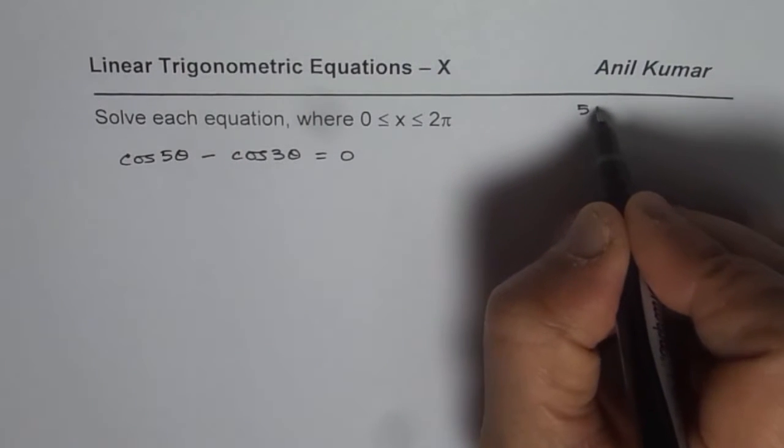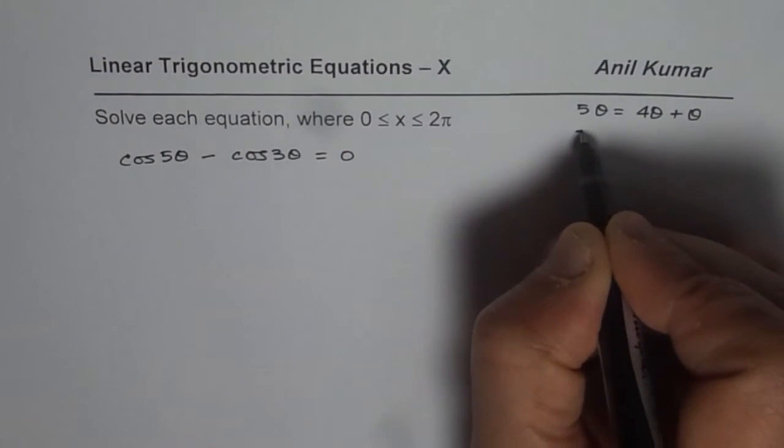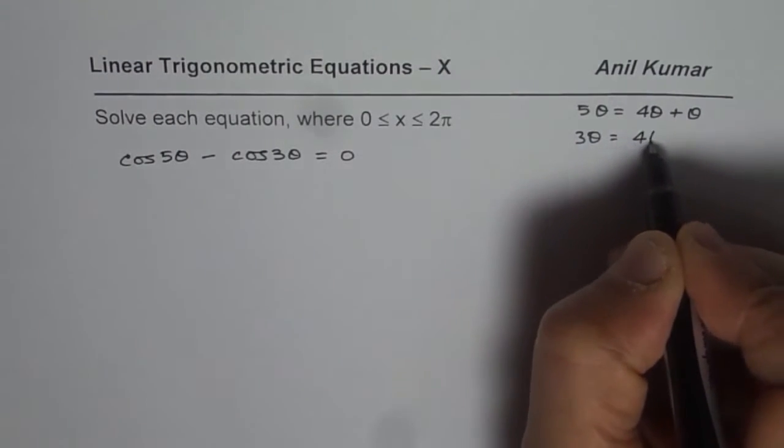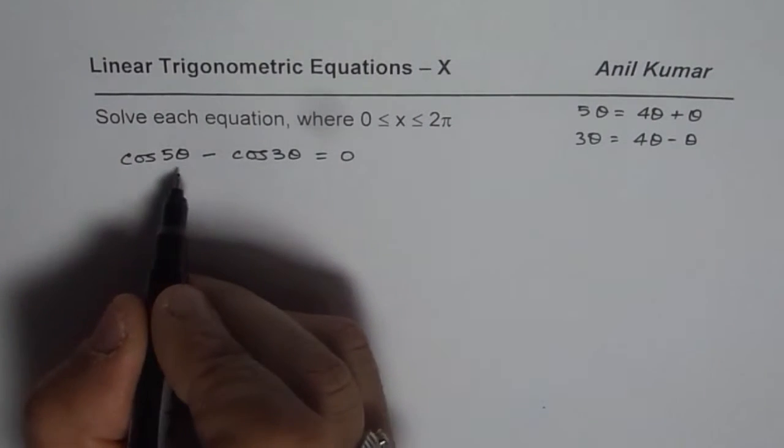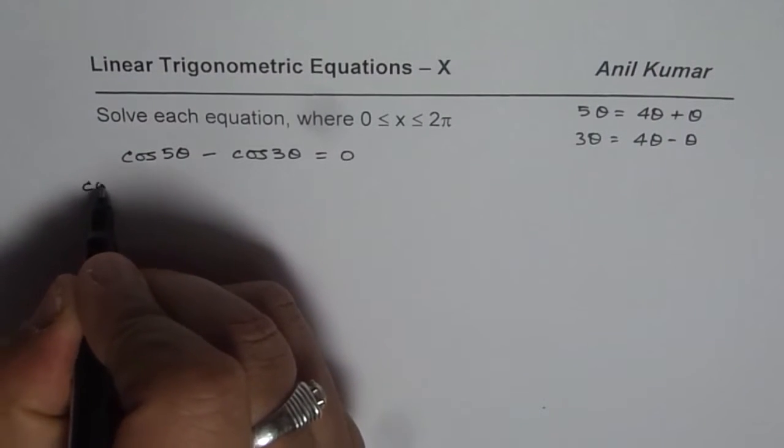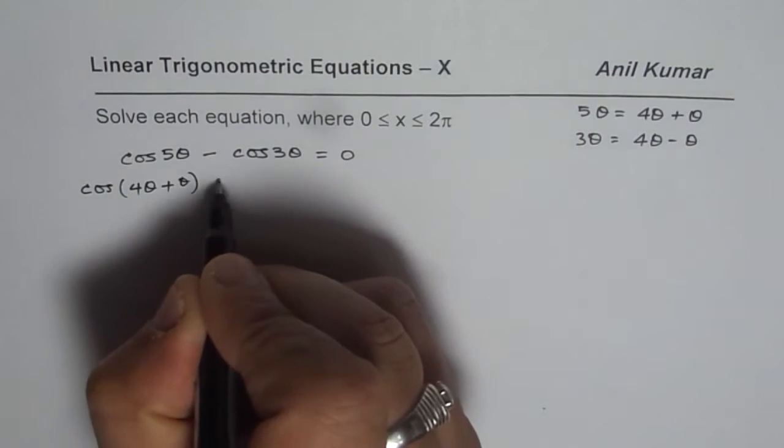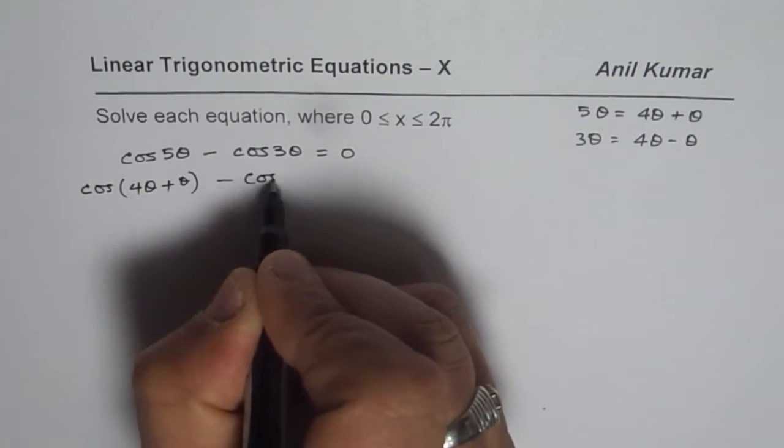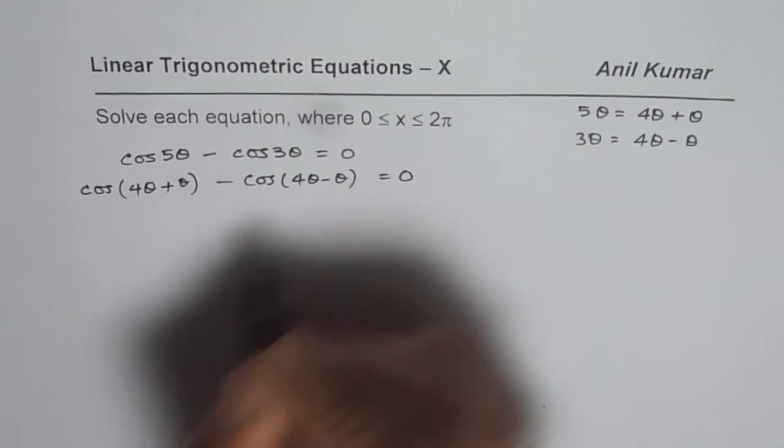You know 5θ could be written as 4θ plus θ, and 3θ can be written as 4θ minus θ. So we can write this expression on the left side as cos of 4θ plus θ, and 3θ as cos of 4θ minus θ equals 0.